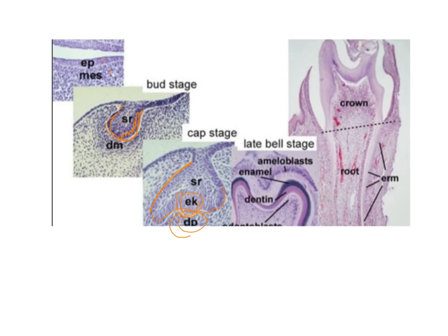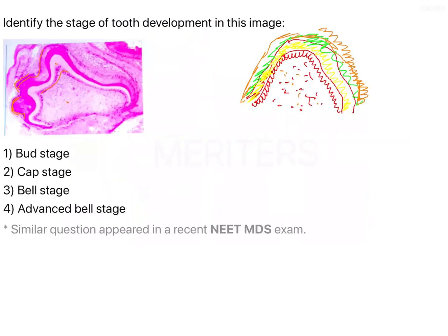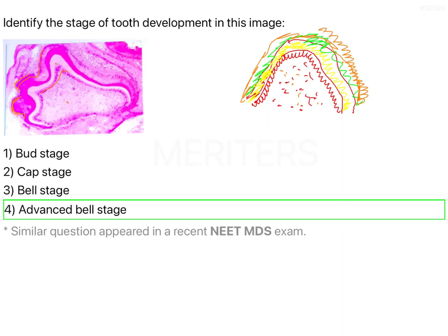The basophilic layer is the enamel, the eosinophilic layer is the dentine, these are the odontoblasts, these are the ameloblasts, and these are the dental papilla cells. The dental papilla cells will later give rise to all the cells of the pulp. Coming to the question, they have asked you to identify the stage of tooth development, and the answer is the advanced bell stage, because you can see it has grown so much.